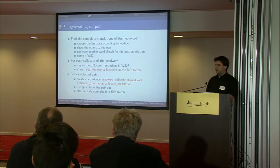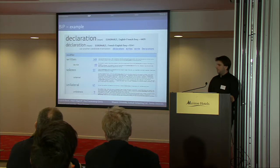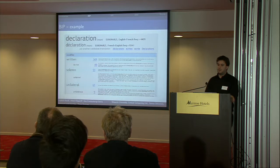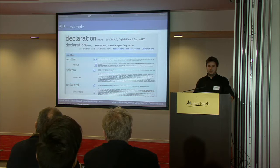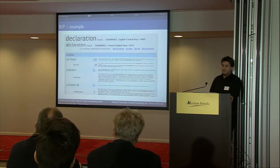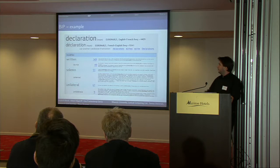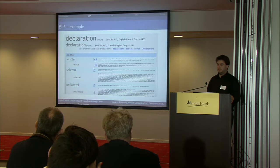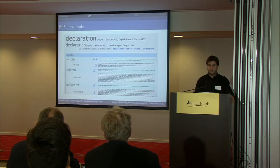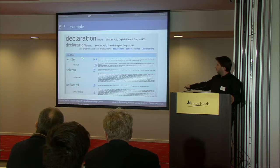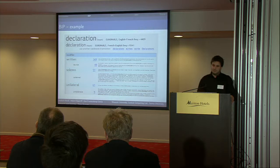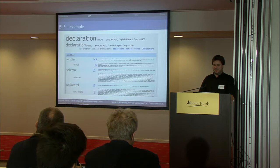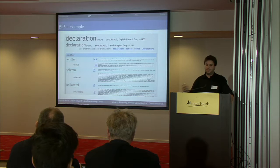It looks like this. This is an example from the current implementation on the beta server of the Sketch Engine service. It's using the EuroParl 5 English-French data with the English head word 'declaration'. The French translation 'déclaration' was automatically found and evaluated as the best translation. Here are other candidates. You can see that in the relation 'modifier', 'written' translates to 'écrite' and 'solemn' translates to 'solennel'. The invisible text here are the examples — I made it smaller for the presentation so the translations would be readable.